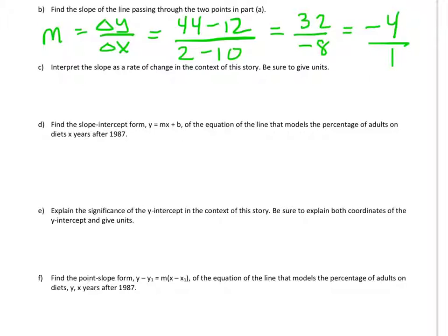Okay, interpret the slope as a rate of change in the context of this story. Be sure to give units. So the slope was a change in y over a change in x. So we have a decrease, that negative sign means a decrease in y, for every one increase in x.